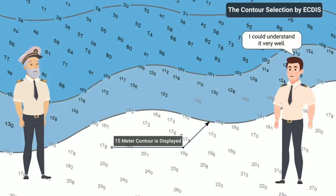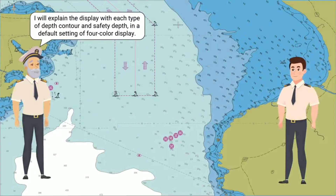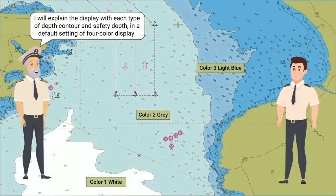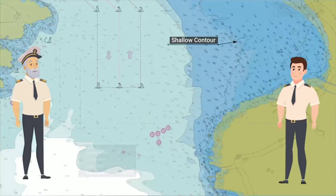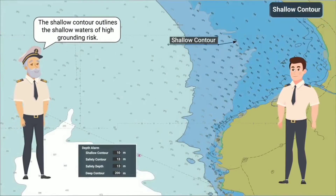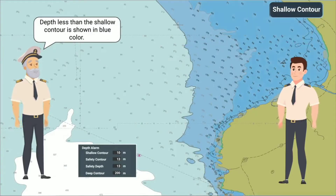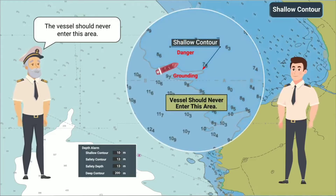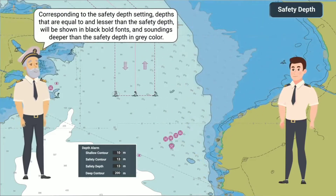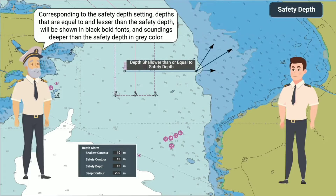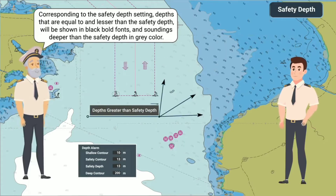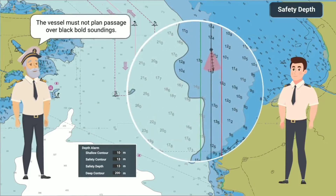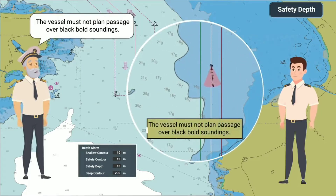I could understand it very well. I will explain the display with each type of depth contour and safety depth in a default setting of four-color display. The shallow contour outlines the shallow waters of high grounding risk. Depth less than the shallow contour is shown in blue color — the vessel should never enter this area. Depths equal to and lesser than the safety depth will be shown in black bold fonts, and soundings deeper than the safety depth in gray color. The vessel must not plan passage over black bold soundings.